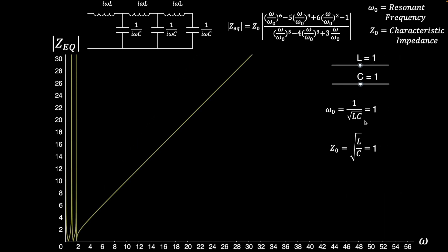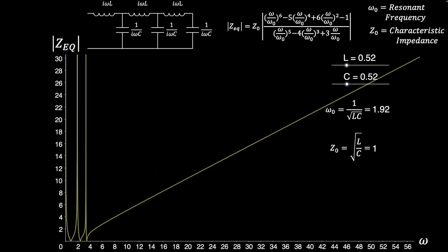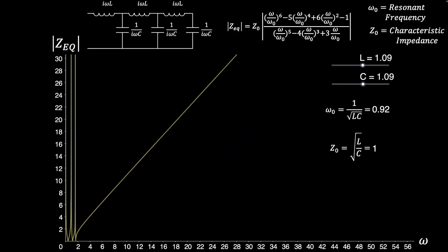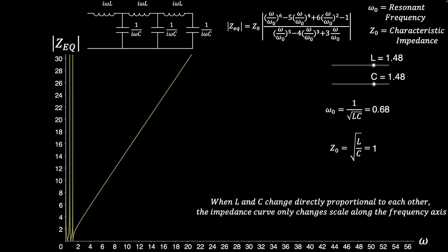In this scene, I'll adjust the values of inductance and capacitance in the same way, increasing or decreasing the values together. Note that the characteristic impedance doesn't change, but resonant frequency does. The impedance curve only shrinks or stretches along the frequency axis.